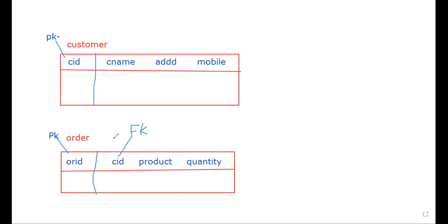The customer_id in the customer table is the primary key — unique and not null. The same customer_id in the order table is the foreign key — it references the primary key of the customer table. By using this key constraint, we relate the two tables. This is the relationship between primary key and foreign key.